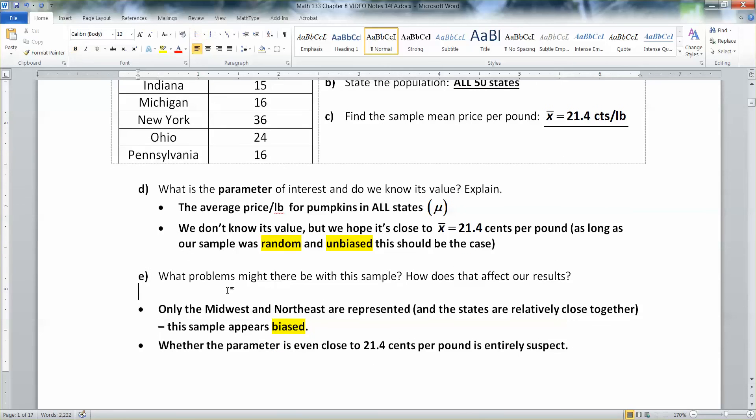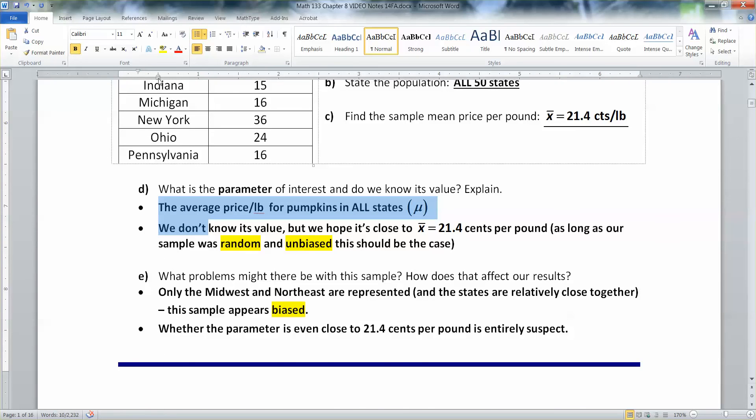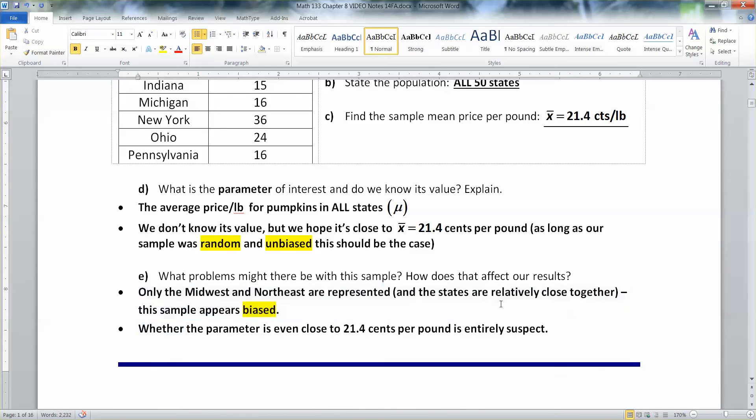So, this sample appears to be biased. And once you have a biased sample, you're in trouble. Because that means that all the numbers you created from it, like mean and the x bar and all that stuff, they all are dodgy. So, you've got to be careful.